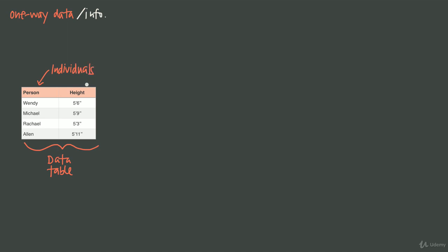It's important to say that individuals aren't always people. They can be cases, things, studies, all different kinds of objects. When we say individuals, we don't just mean human people — we mean the object around which the data is based. So this table is focused on each person, meaning the people are the individuals in this case.